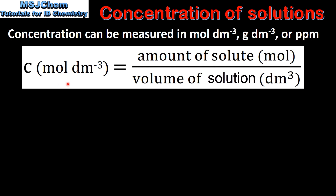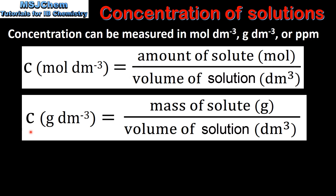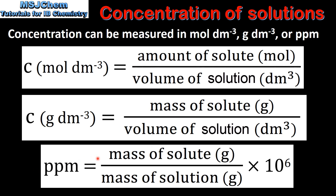Concentration in moles per decimeter cubed is equal to the amount of solute in moles divided by the volume of the solution in decimeters cubed. Concentration in grams per decimeter cubed is equal to the mass of solute in grams divided by the volume of the solution in decimeters cubed. Parts per million is equal to the mass of solute in grams divided by the mass of the solution in grams, multiplied by ten to the sixth.